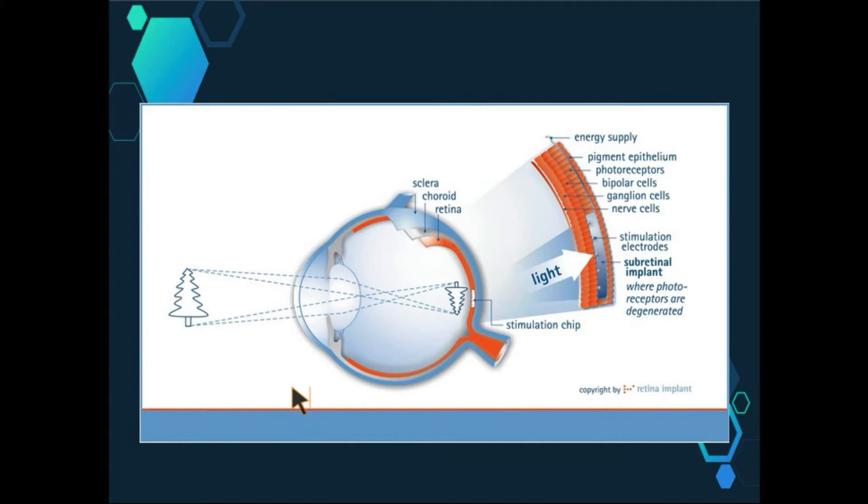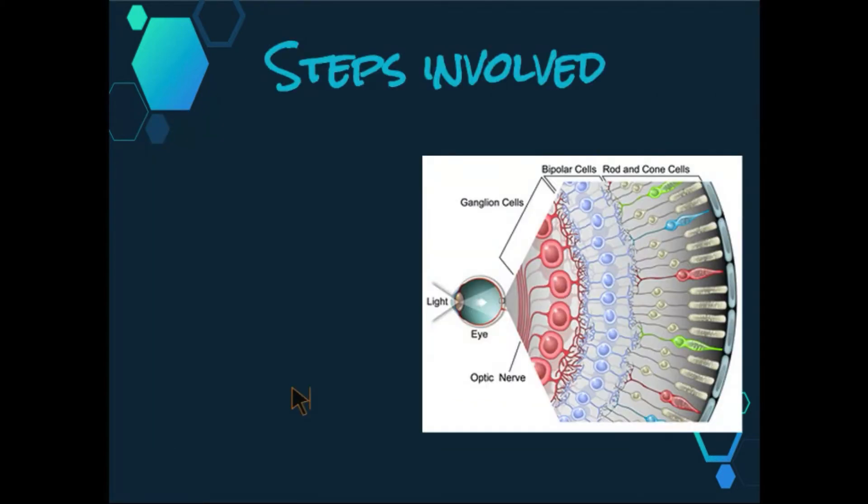This process takes place in several steps as outlined here. First, the light image strikes the retina, which is at the very back of the eye. Photosensitive pigments in the rods and cones then absorb the light. A photochemical change in the rods and cones involving visual pigments generates an electrical impulse.